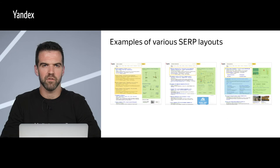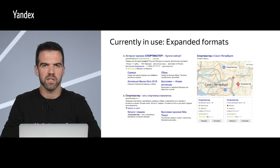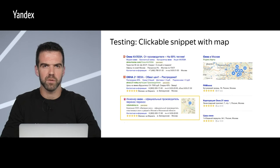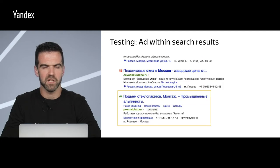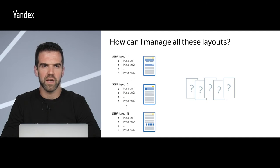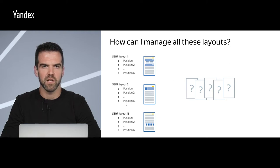Let's look at some of the SERP layouts currently available. One SERP layout already in use is expanded formats — you can add descriptions for your site links when editing your ads. One SERP layout we are currently testing includes a map showing locations of the advertiser's branches or office. Another layout places ads in the middle of the organic search results, and yet another displays information cards with actual product prices. The natural question is how you manage all this variety in the bidding interface, given that different SERP layouts with different positions don't match the old premium and guaranteed placement.